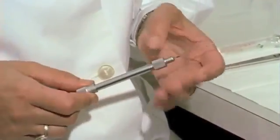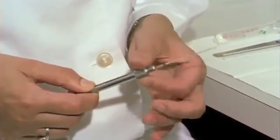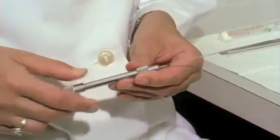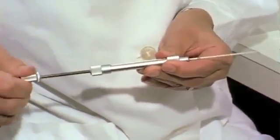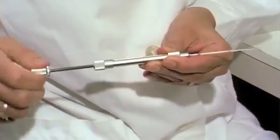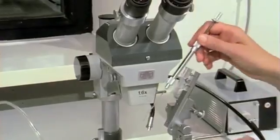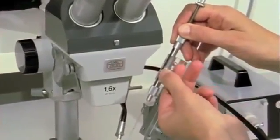The syringe is assembled and the column of liquid advanced to the front, save for a small bubble of air at the tip of the glass tube. Then the syringe is mounted on the insemination apparatus.